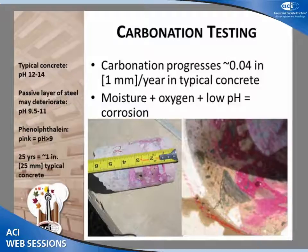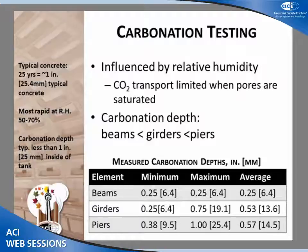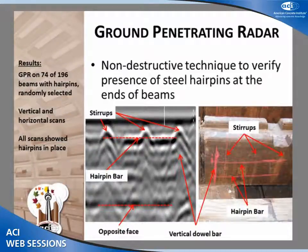Carbonation typically progresses around one millimeter per year. At 25 years old, for typical concrete under typical exposure conditions, you'd expect about an inch of carbonation — which is what we had on the exterior of the tank, with our average around three-quarters of an inch. On the interior of the tank, it was much less because moisture and relative humidity impact carbonation progress. When pores are saturated, carbon dioxide can't transport as fast. The beams, directly exposed to water saturation, showed the least carbonation depth.